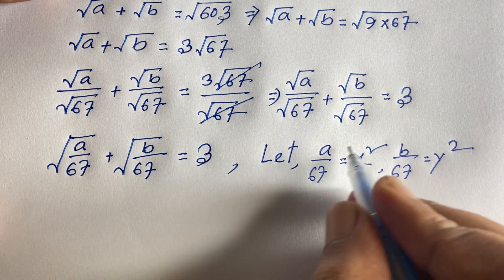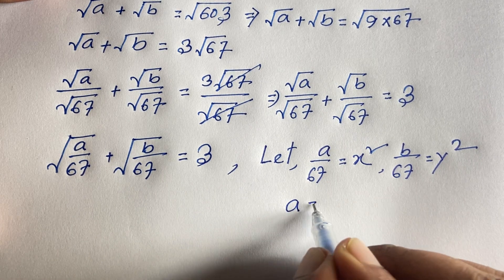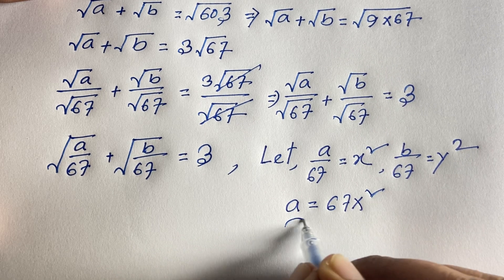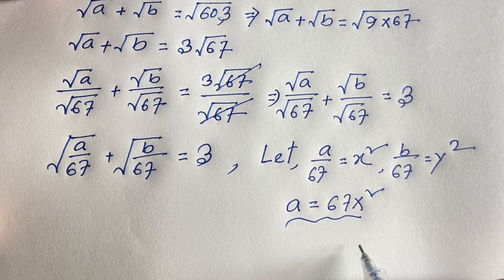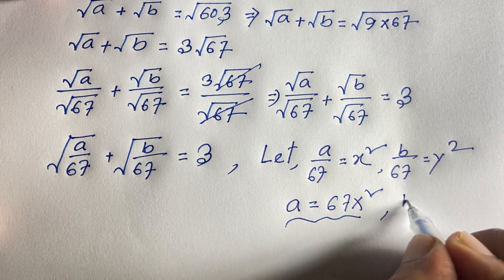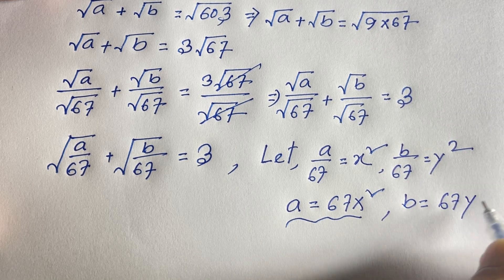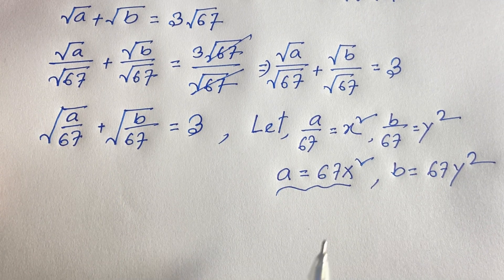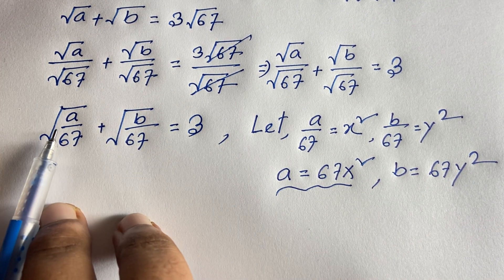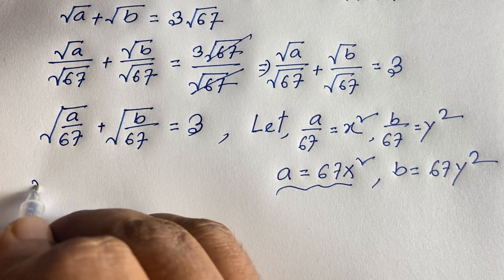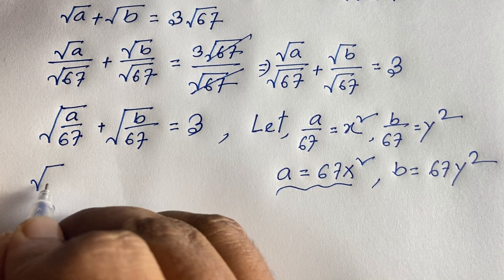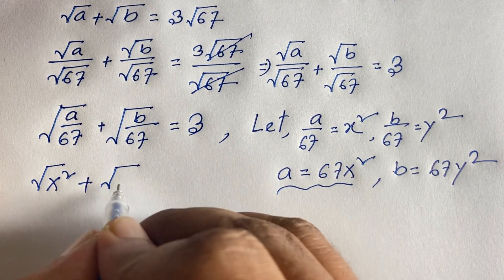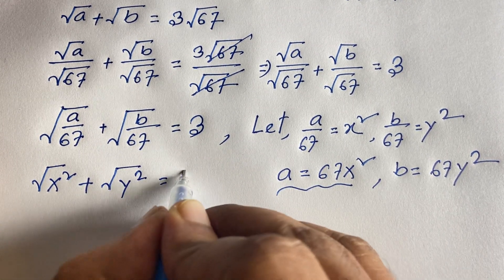From our substitution, a = 67x² and b = 67y². If we put these back into the expression, √(a/67) = √(x²) = x and √(b/67) = √(y²) = y.